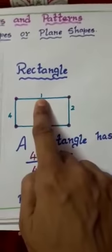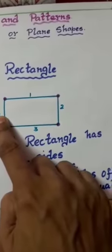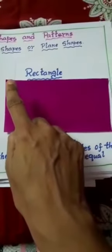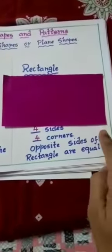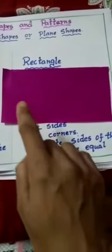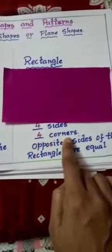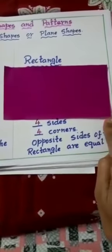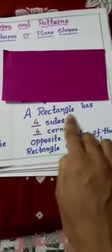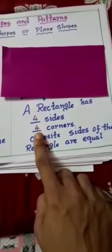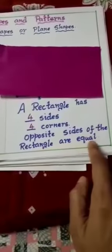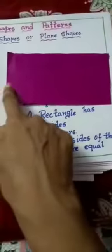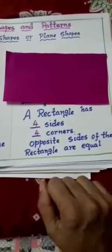This is a rectangle. It has four sides: first side, second side, third side, and fourth side. And how many corners does it have? Four corners: first corner, second corner, third corner, fourth corner. So rectangle has four sides and four corners. Opposite sides of the rectangle are equal — these two sides are equal in length, and these two sides are equal.